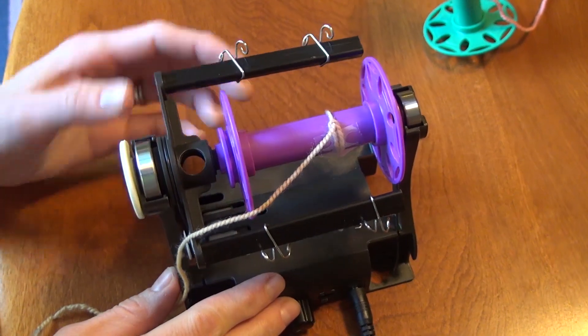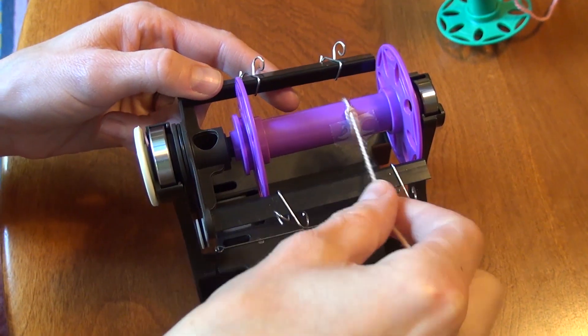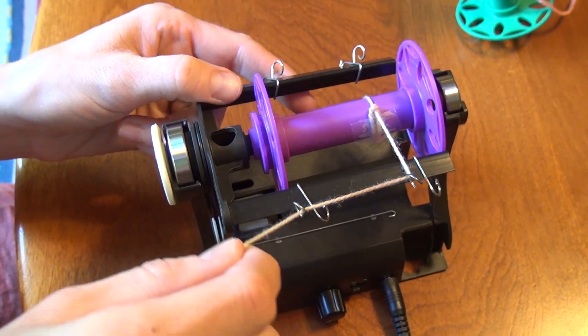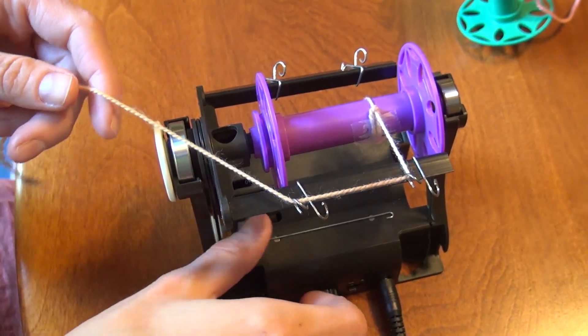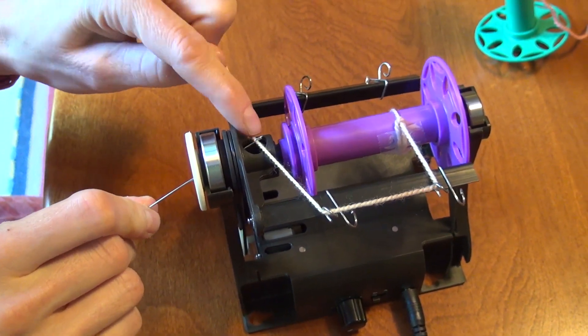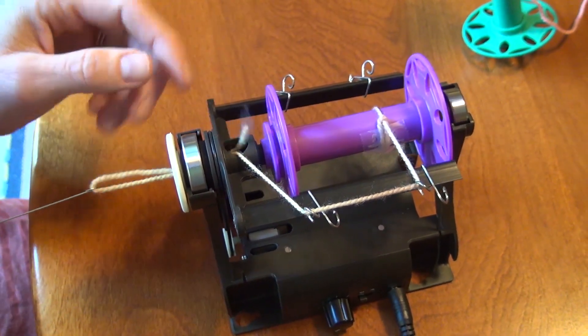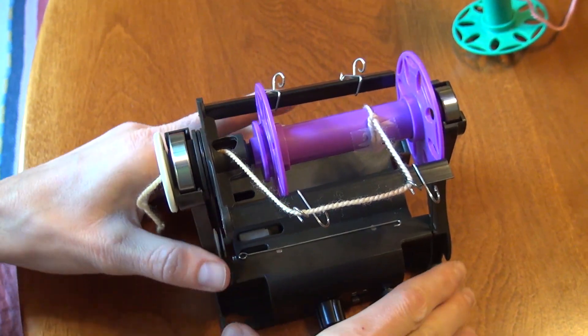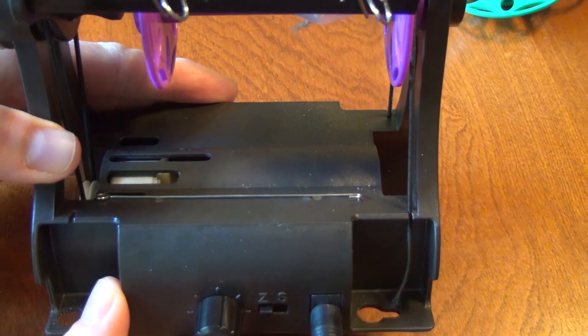So with that information let's start spinning. The first thing you want to do is string the lead yarn through the slide hooks like this. Then use the orifice hook to pull the lead yarn out the front of the Nano. Now before we start make sure that the power switch is in the Z position since we are spinning a single.